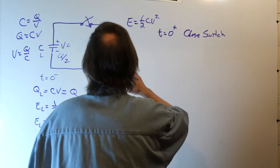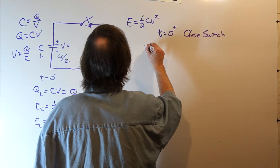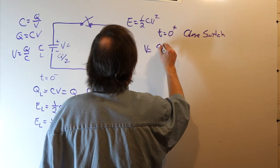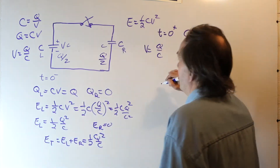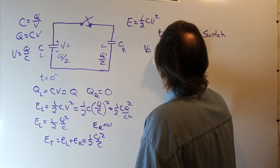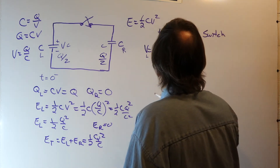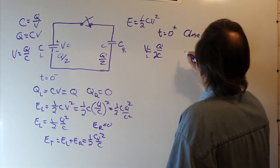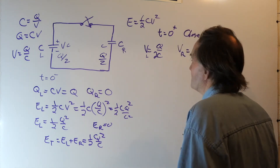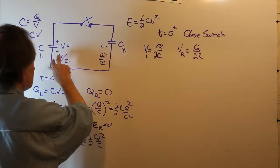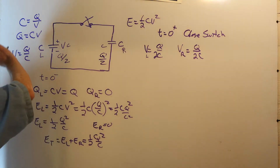What's the voltage on each of the capacitors? Voltage is charge divided by capacitance. The charge on each is Q over 2, so the voltage on the left is Q over 2C, and the voltage on the right is also Q over 2C — half of what it was before, because the charge halved on each plate. It's a linear relationship.